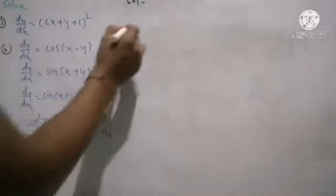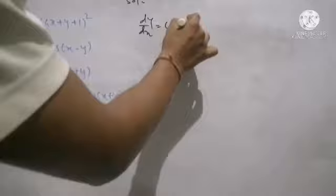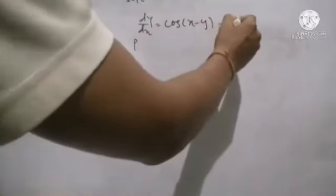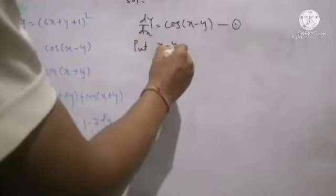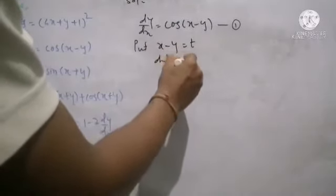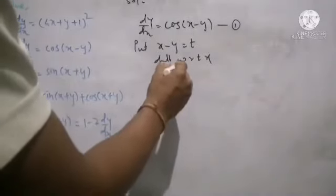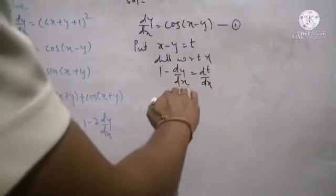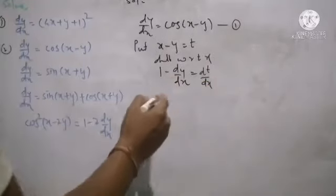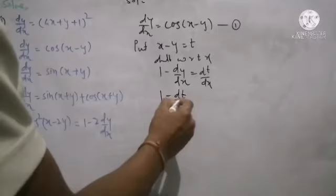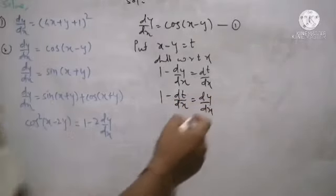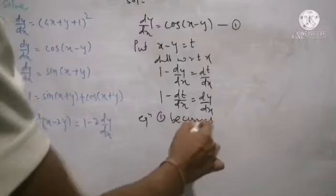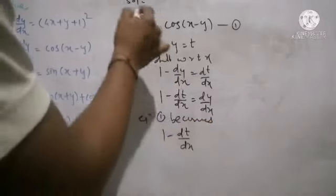Example number 2: dy by dx equals cos of x minus y. This is reducible to variable separable form as x minus y is the linear term replaced in the cosine function. Taking this as equation 1, we put x minus y as linear term equal to t. Taking differentiation with respect to x: derivative of x is 1 and derivative of y is dy by dx, and t has derivative dt by dx. Separating dy by dx: we get dy by dx equals 1 minus dt by dx. Substituting into equation 1: on the left hand side 1 minus dt by dx, and on the right hand side cos of t.